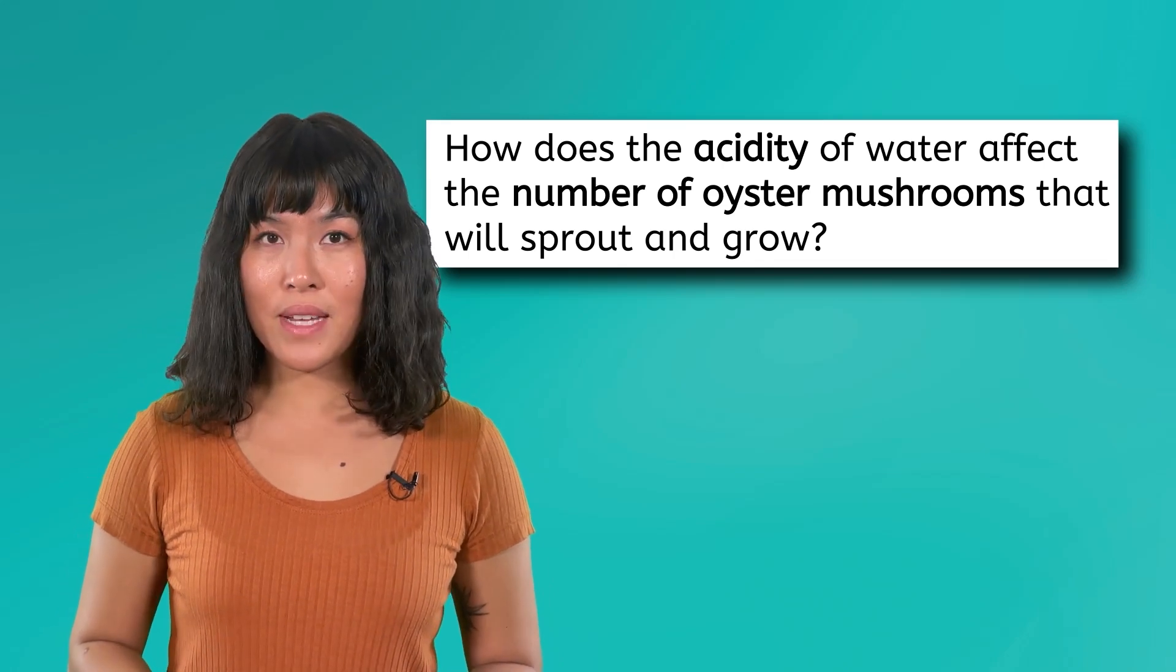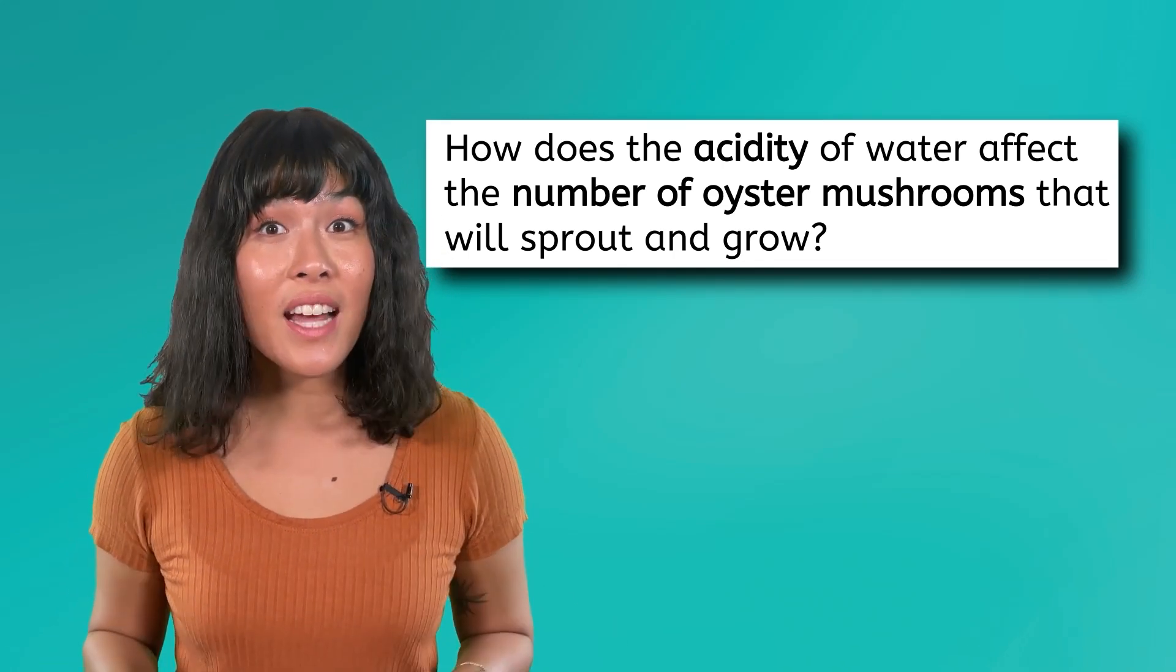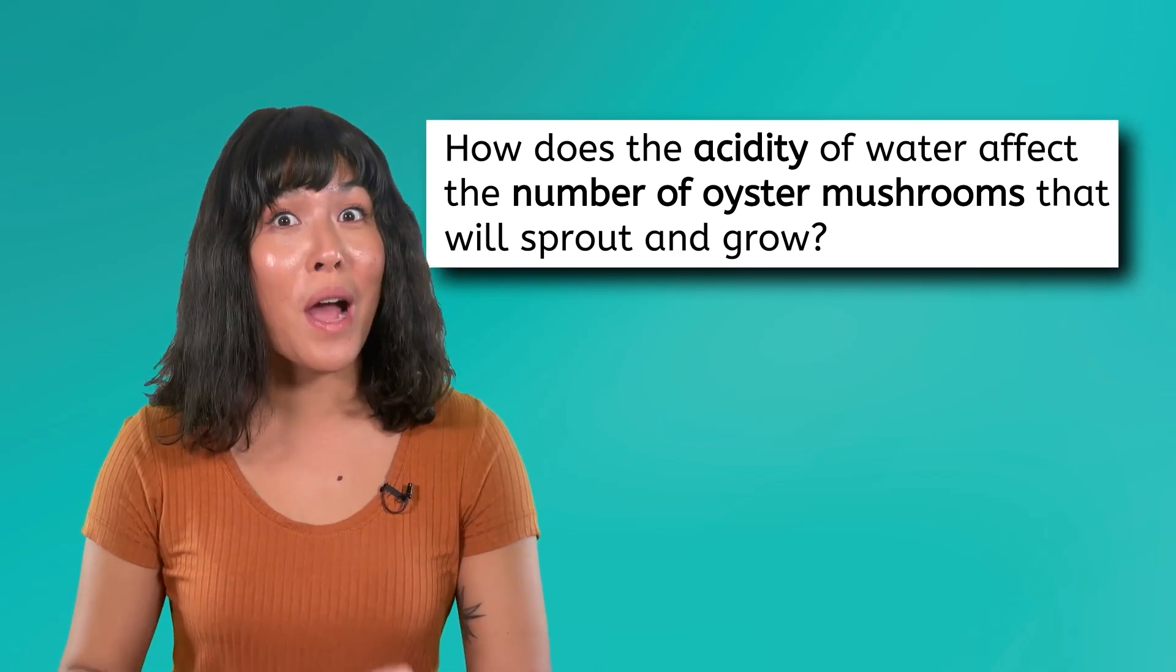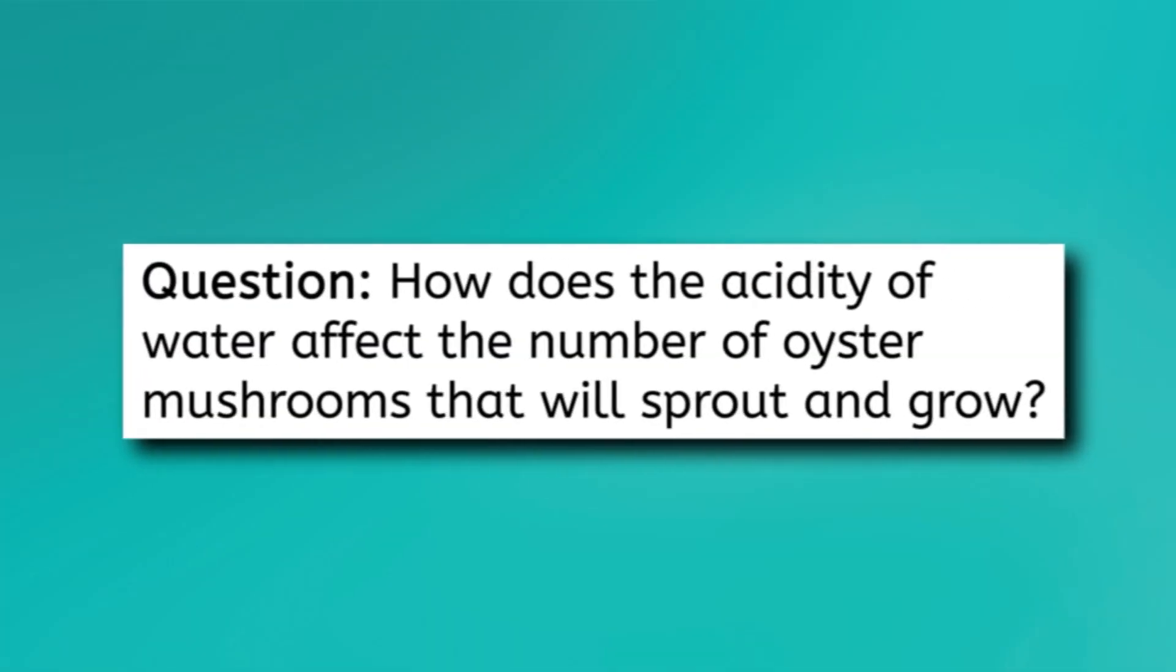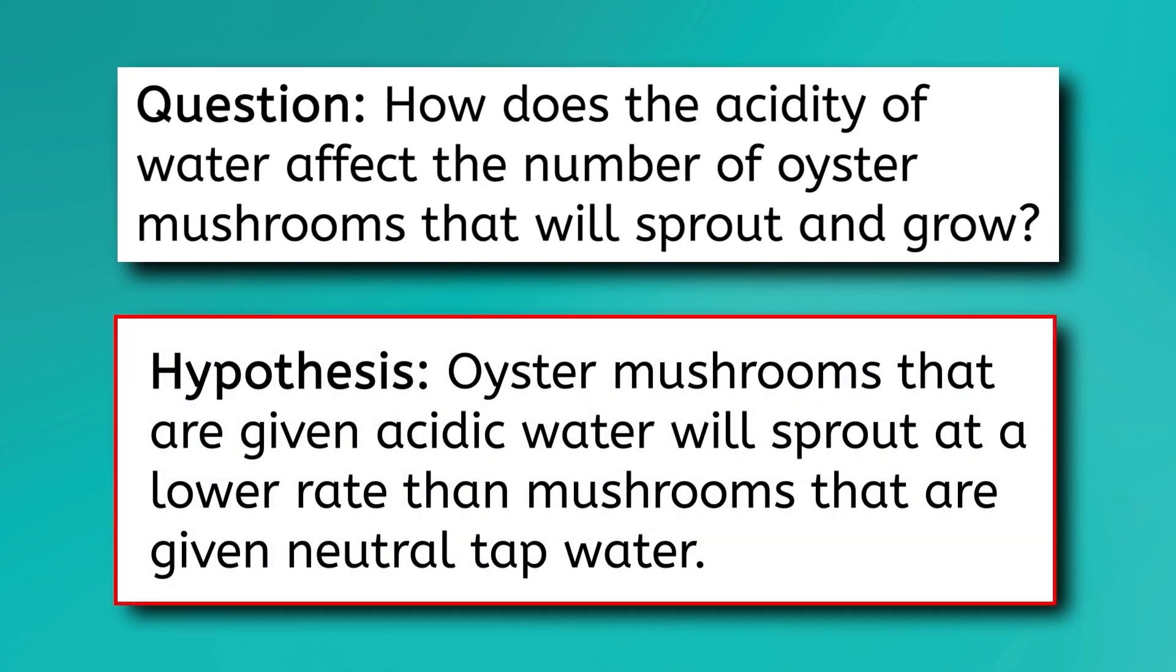Both variables in my experiment, the acidity and number of mushrooms sprouting, are clearly identified, and the question relates the factor I am testing to my results. Now that I have a question, I can make a hypothesis. Here's my prediction. Oyster mushrooms that are given acidic water will sprout at a lower rate than mushrooms that are given neutral tap water.